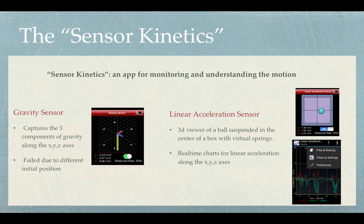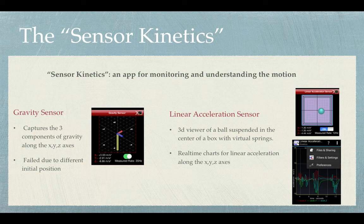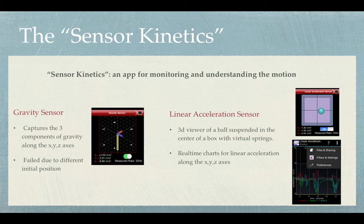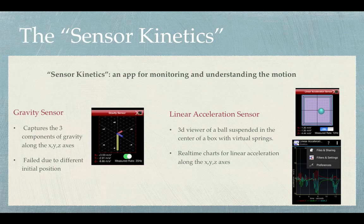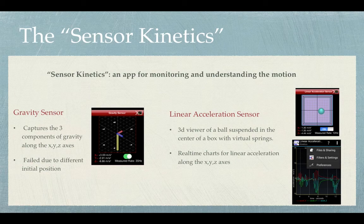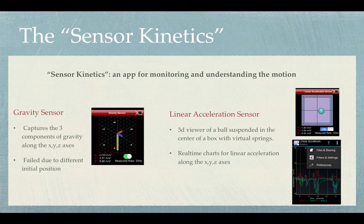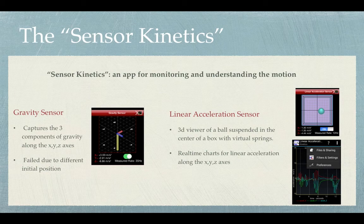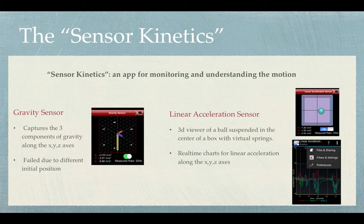Sensor kinetics is an app for monitoring and understanding motion from different perspectives provided by specific sensors. We originally tried to use the gravity sensor to measure the displacement of the shoulder. However, we later discovered that, due to different initial positions, it's hard to compare the two players using this sensor. We later switched to the linear acceleration sensor because it includes a 3D viewer to demonstrate the linear acceleration concept, and it will generate a chart to display the time axis as well as the x, y, z space axes.